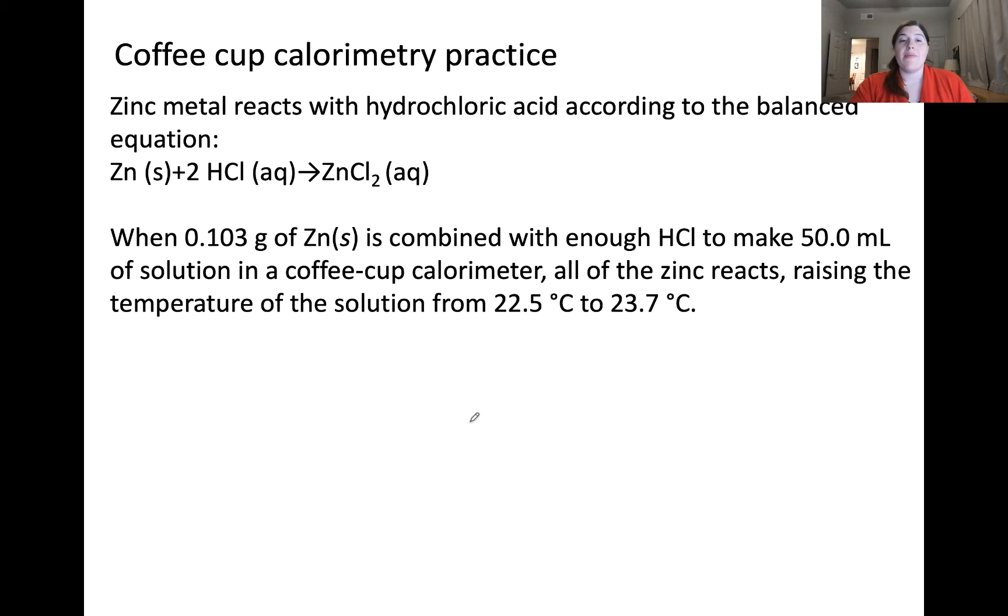In this type of problem, we're given a chemical reaction, an amount of our reactants, and some information about the temperature change observed for the solution. Our goal will be first to find delta H of this reaction as the reaction is written in joules.